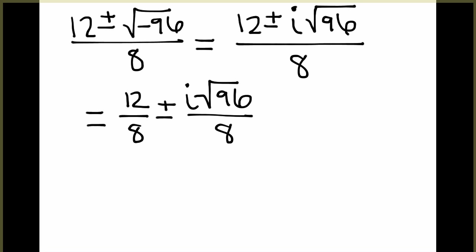So what I suggest doing is splitting up the expression into the real part, 12 over 8, and the imaginary part, i square root of 96 over 8. And then if we're just looking for an approximation,